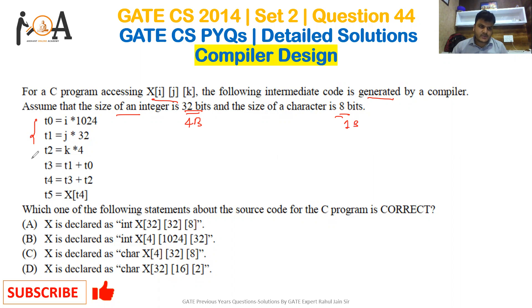Here we have t0, t1, t2, t3, t4, and t5 with the following intermediate code. Which one of the following statements about the source code for the C program is correct?